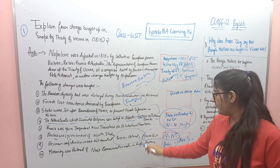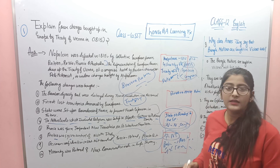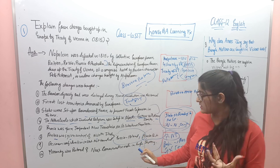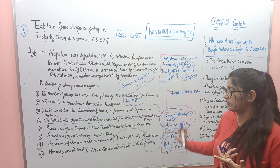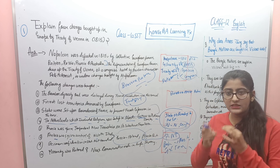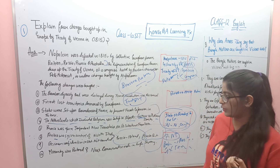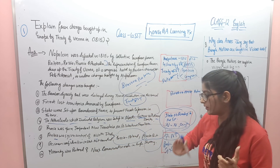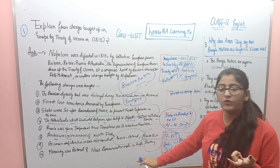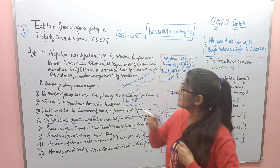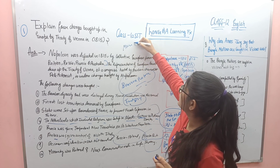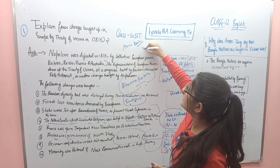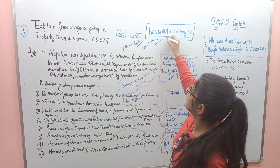Russia was given Poland, and Prussia became a part of Saxony. Keyword: 'Russia Poland, Prussia Saxony' — Russia was given control of Poland and Prussia became a part of Saxony. And the last point: monarchy was restored in Europe, a new conservative order was set up. Keyword: 'Monarchy restore, conservative order.'